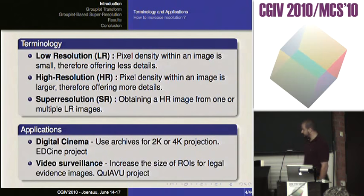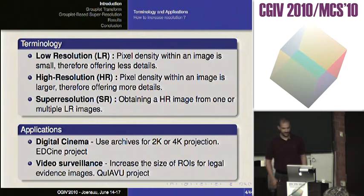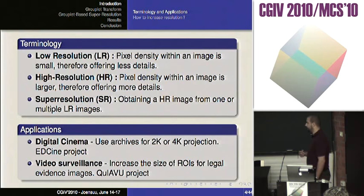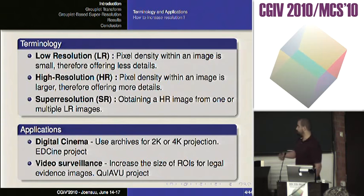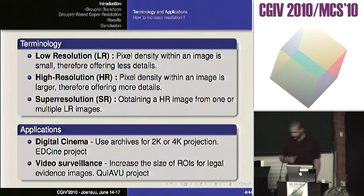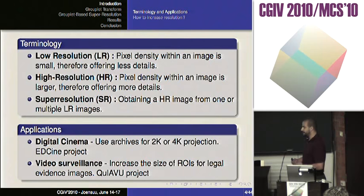So why have we focused on this work? We had several problems, especially for two applications. The first is digital cinema, because we have plenty of small or low-resolution content that we need to display at 2K, 4K, or maybe in the future at 8K resolution. We don't need to recreate the content and we cannot do it, especially when it comes from the archives. One of the most important focuses was how to extend the size of archives in order to display them.